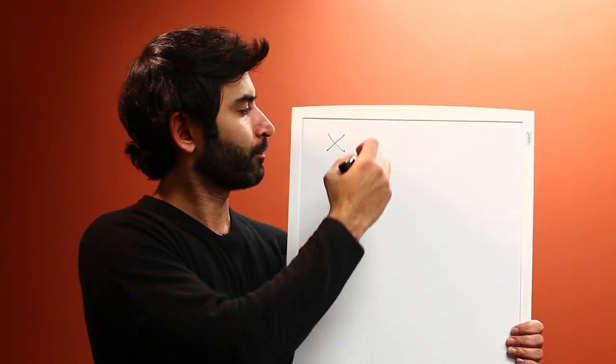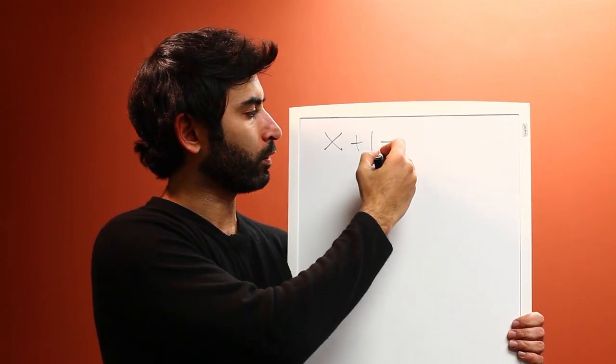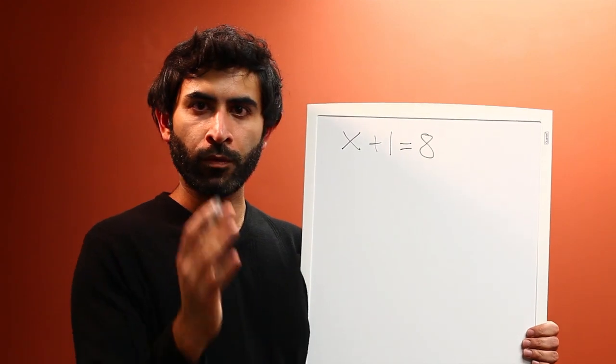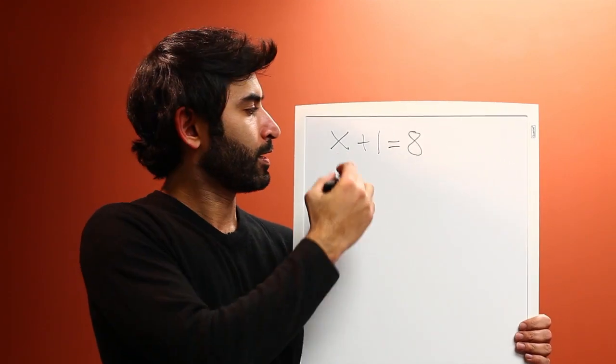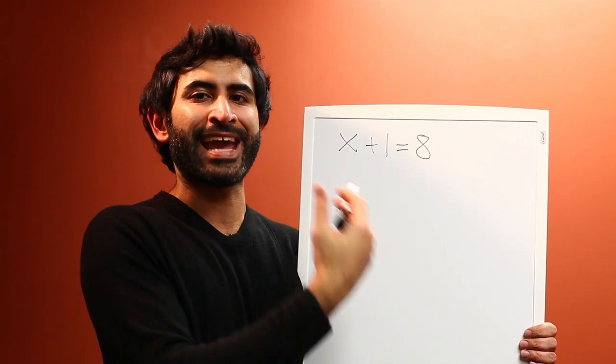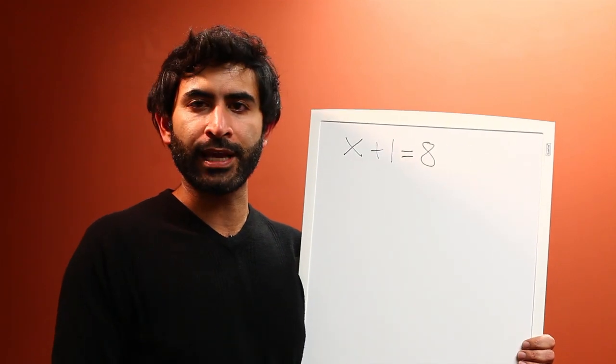Now let's say I have X plus 1 equals 8. So basically what this is saying is there's something, some value, when I add it to 1, it equals 8. Now obviously if you look at it, it's like oh yeah, it's 7. 7 plus 1 is 8.